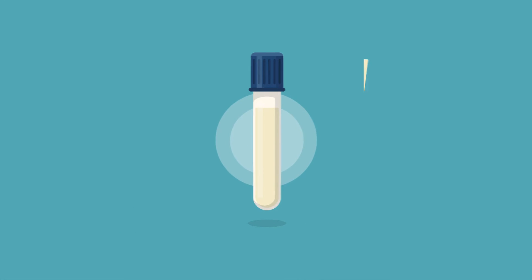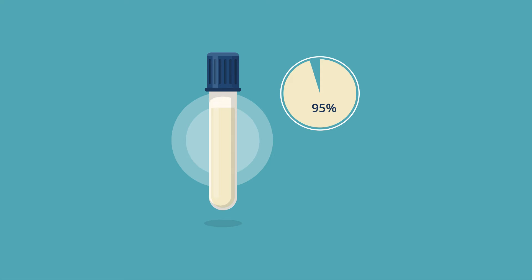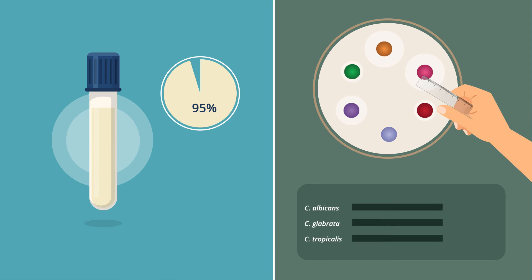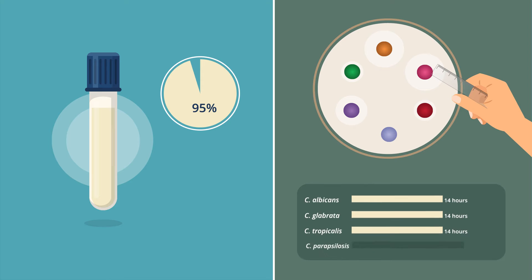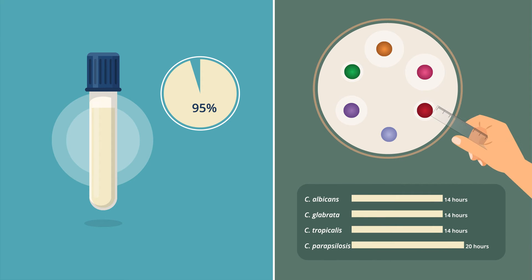They observed that for more than 95% of the isolates, the DDT results for the standard inoculum were readable after 14 hours for C. albicans, C. glabrata, and C. tropicalis, and 20 hours for C. parapsilosis.